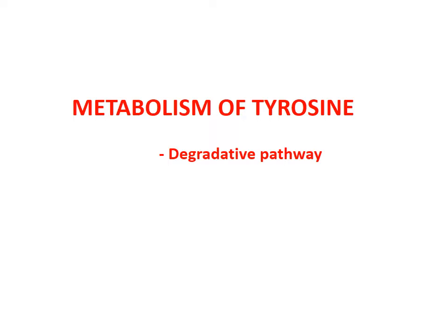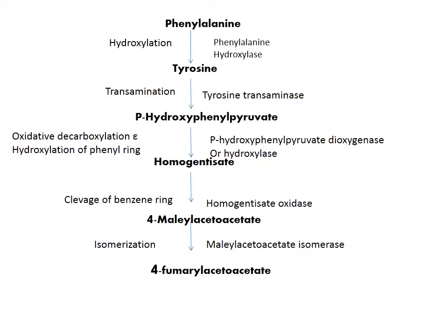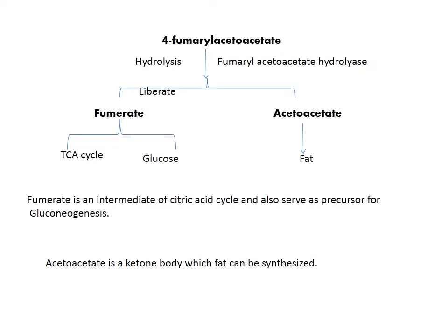Now we will see the metabolism of tyrosine — the degradative pathway. Phenylalanine undergoes hydroxylation by the enzyme hydroxylase to produce tyrosine. Tyrosine undergoes transamination to produce parahydroxyphenylpyruvate, which undergoes oxidative decarboxylation and hydroxylation of the phenyl ring to produce homogentisate. Homogentisate is converted into 4-maleylacetoacetate by cleavage of the benzene ring. 4-maleylacetoacetate undergoes isomerization to produce 4-fumarylacetoacetate by the enzyme isomerase.